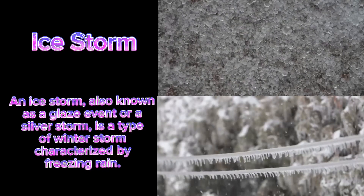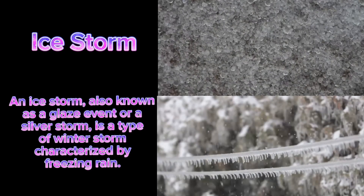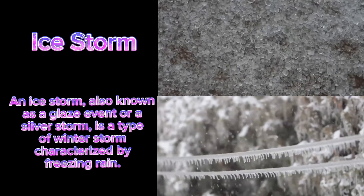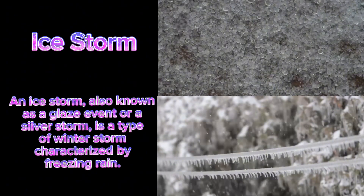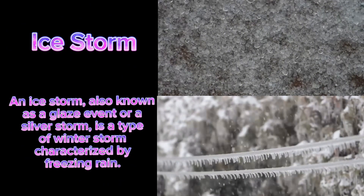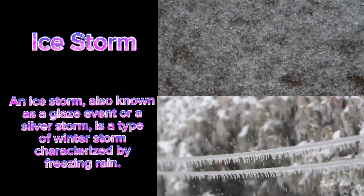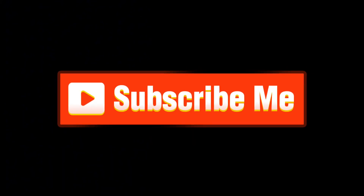An ice storm, also known as a glaze event or a silver storm, is a type of winter storm characterized by freezing rain. Thanks for tuning in with TinyMeTV.